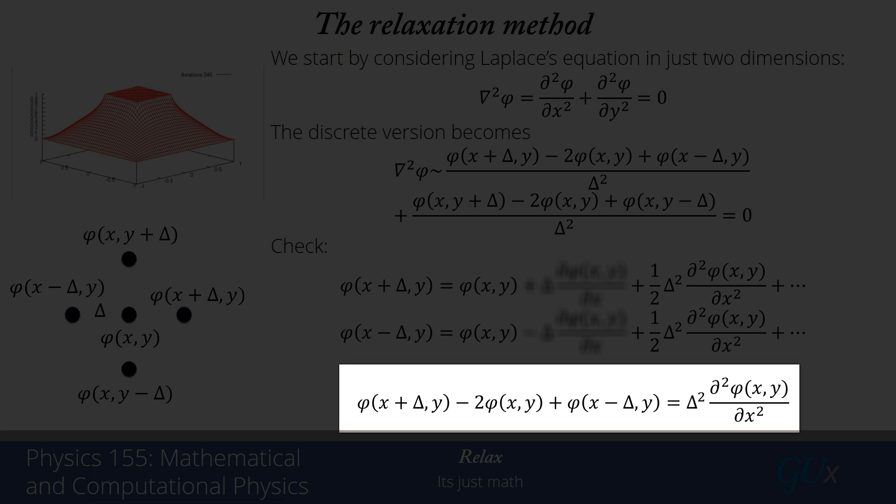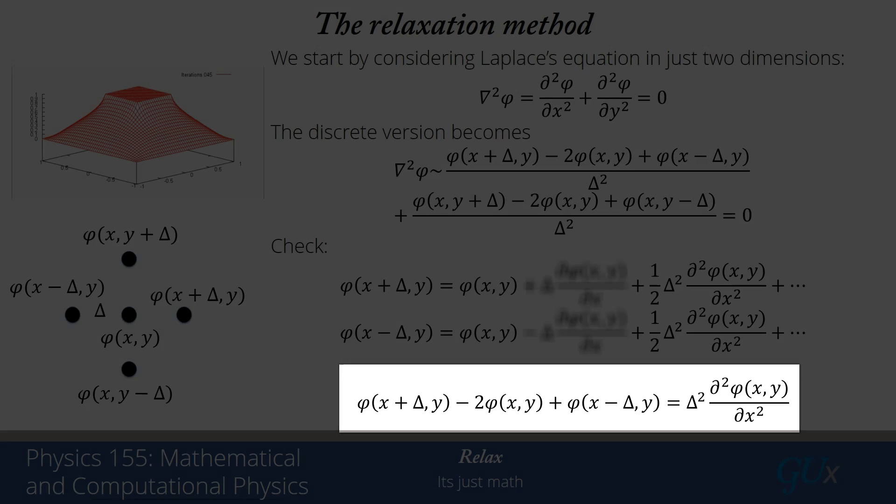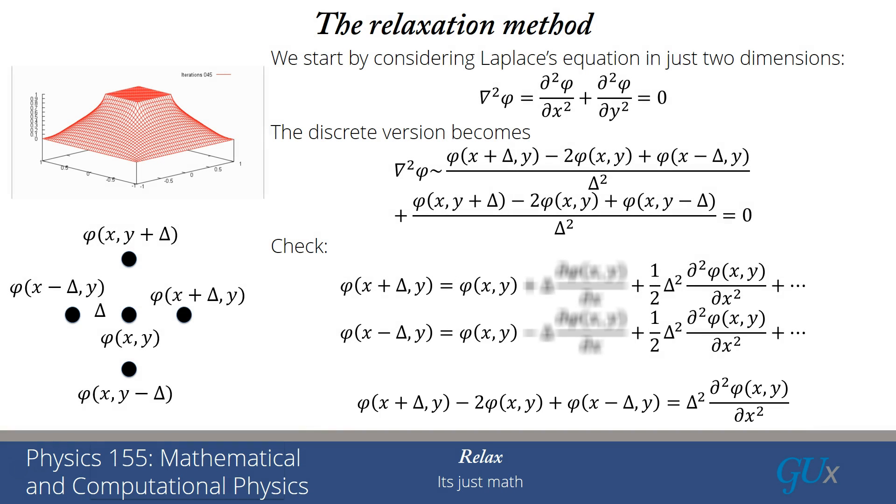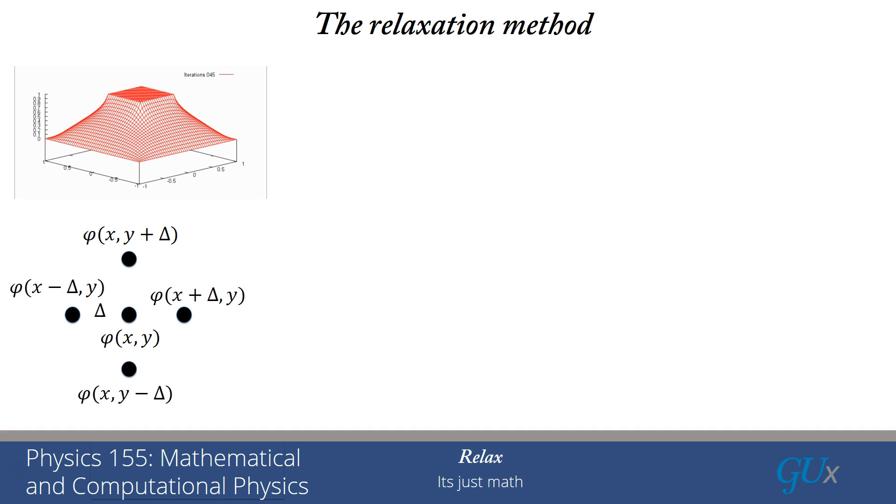Now we know it's an approximation because there are third order terms and higher order terms that we dropped. We didn't include in this analysis, so it's not an exact relation. But as delta gets smaller and smaller, it becomes more and more accurate.